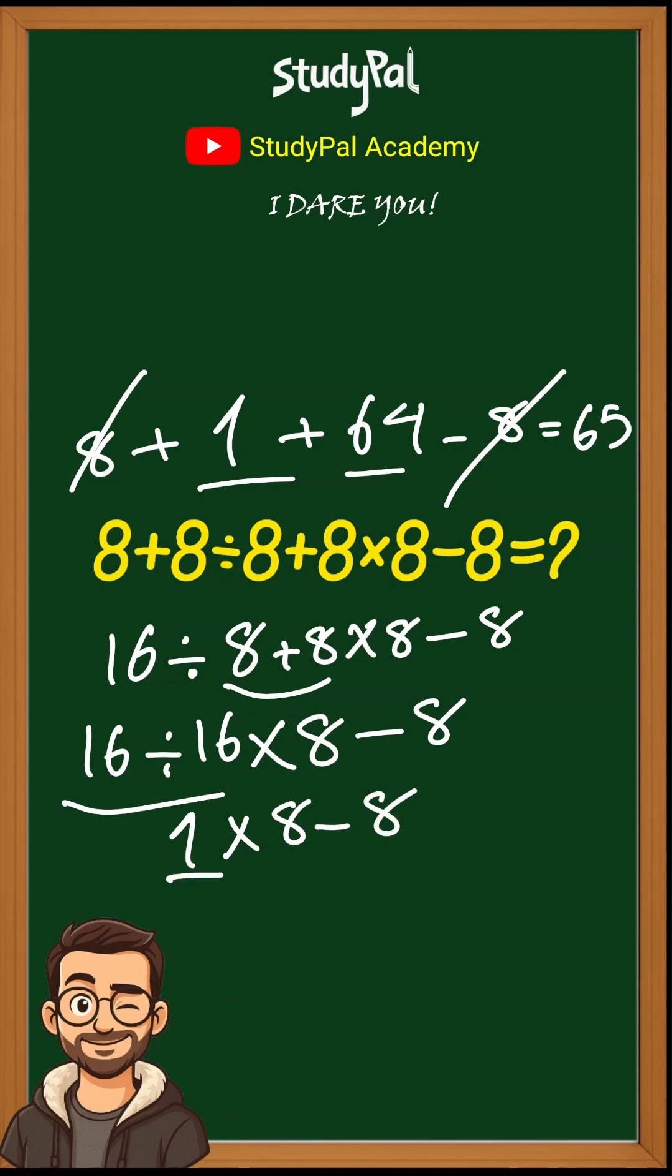So 1 times 8 is 8, and minus 8 is 0. Zero and 65. Which one is correct? Drop in the comments.